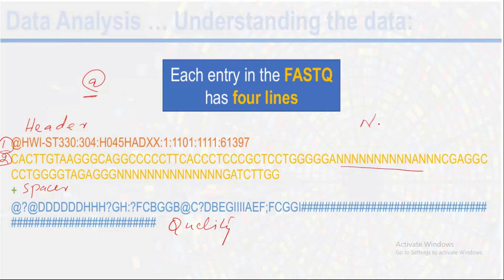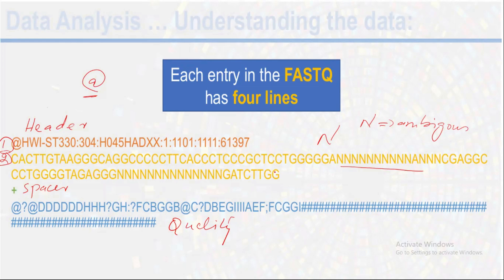The 'N' characters in a sequence are basically ambiguous bases — those are bases that the scanner cannot differentiate, where the scanner cannot determine what that base is. When it gets confused, it assigns 'N' as an ambiguous base. I will discuss in detail why ambiguous bases are generated in another video related to data quality. After the sequence there is a spacer, and then there is the quality of that read.